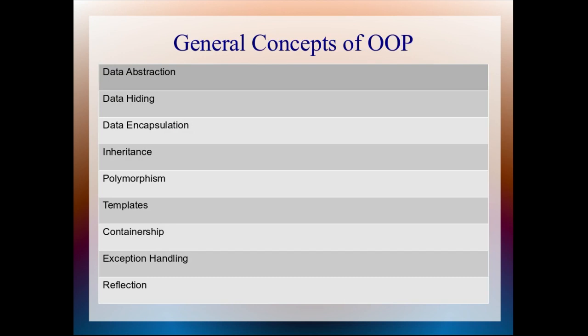General Concepts of Object Oriented Programming. I think you already learned these words. You must have learned these words: Data Abstraction, Data Hiding, Data Encapsulation, Inheritance, Polymorphism, Templates, Containership, Exception Handling, Reflection. These words you may have learned in the first or second chapter of your textbook.